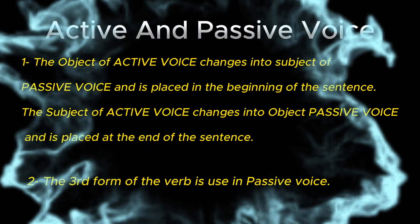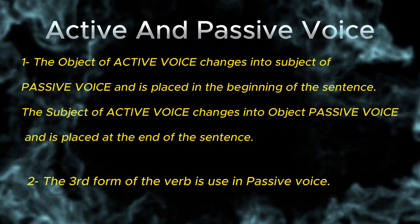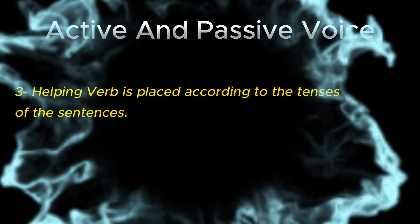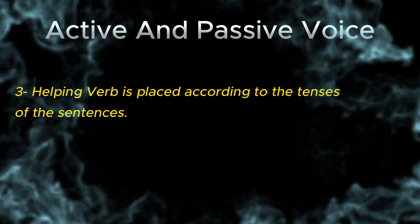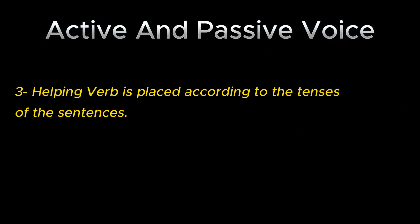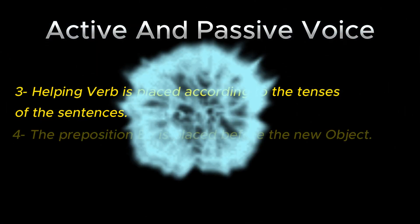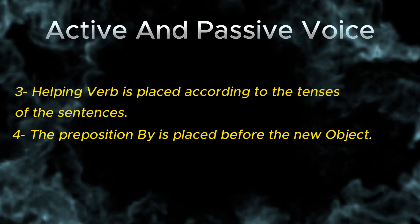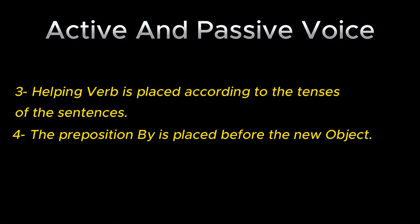Two: the third form of the verb is used in passive voice. Three: the helping verb is placed according to the tense of the sentence. Four: the preposition 'by' is placed before the new object.